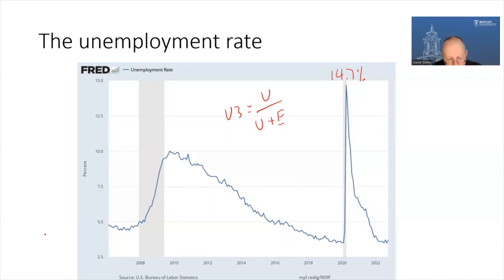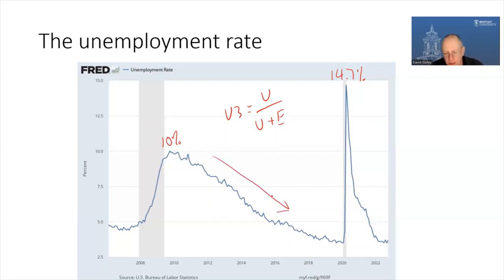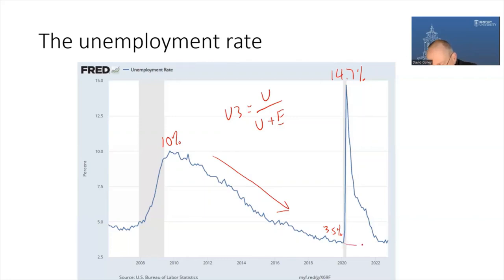Going back here, unemployment peaked out at 10% post-Great Recession. You can see the slow downward trend. Just before the pandemic, in February 2020, the unemployment rate reached 3.5%. Then in March and April it skyrocketed up to a maximum of 14.7%. We've seen a very fast downward decline in the unemployment rate since. Now, post-pandemic in late 2022, the unemployment rate has reached its pre-pandemic lows. By this metric, it looks like the labor market has healed — but there's more to the story.